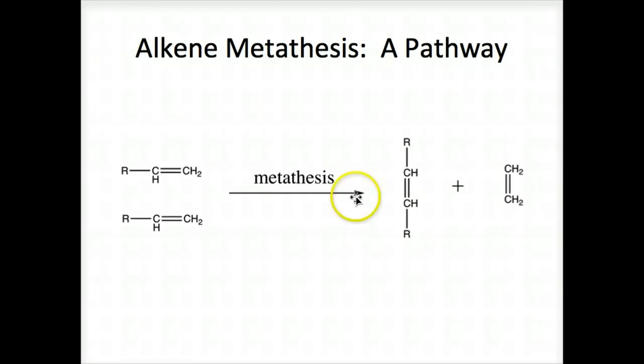You'll notice both of these reactants are terminal alkenes. It's this carbon and this carbon on the second reactant that join, and then the terminal carbons join to form the second product. Notice the second product is ethene, a gas. It's readily formed, and so we call this metathesis.